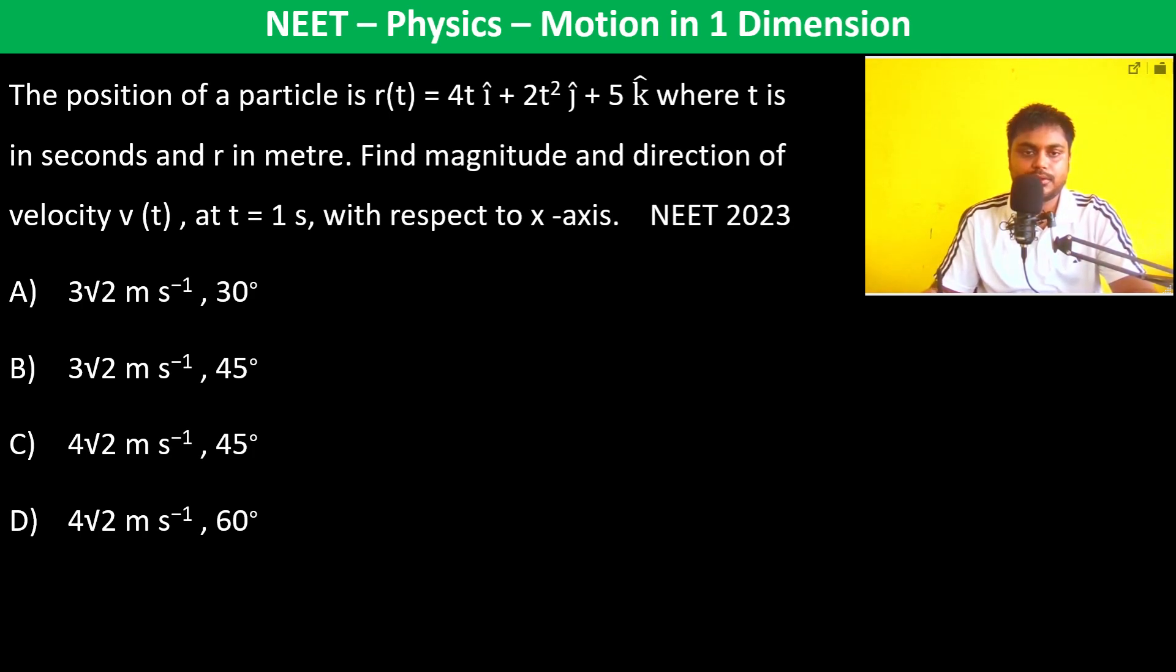The velocity is dr/dt, which is 4î + 4tĵ plus... since the k component is constant, its differentiation is 0.